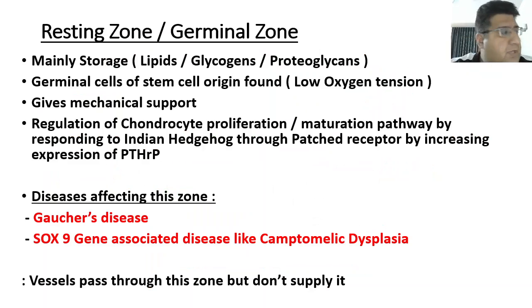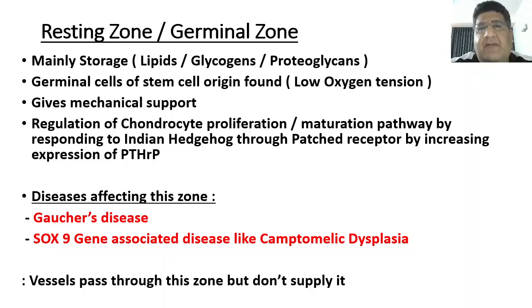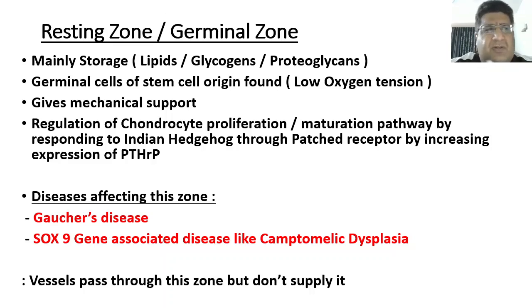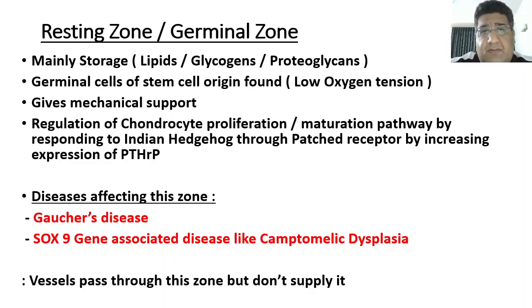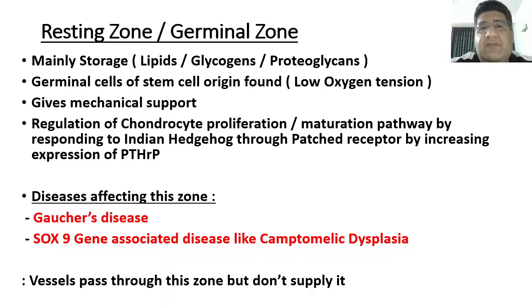Let's start with the first layer — the resting zone or the germinal zone. The essential job of this zone is storage: it can store lipids, glycogen, and proteoglycans. You see a lot of germinal cells here — that is why we call it a germinal zone. Those germinal cells are basically of stem cell origin; they can divide, proliferate, and multiply into anything.